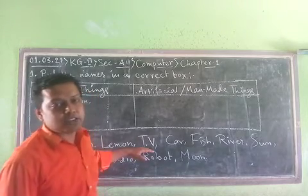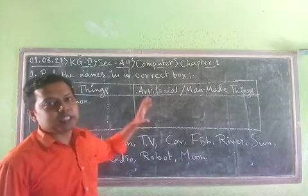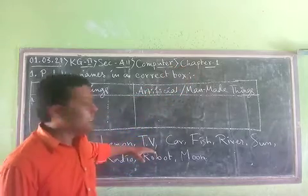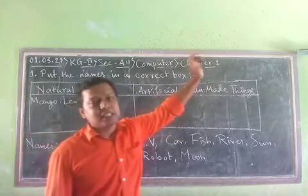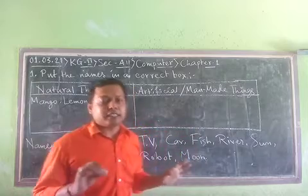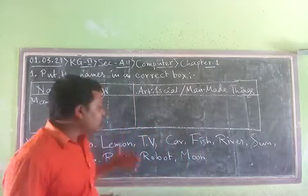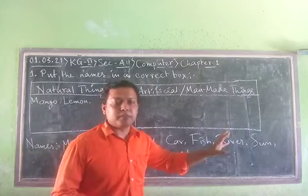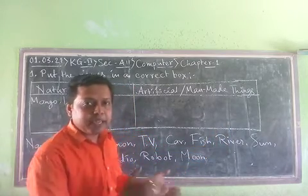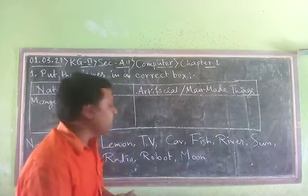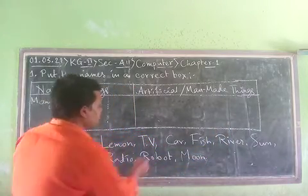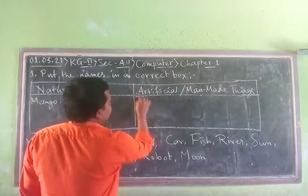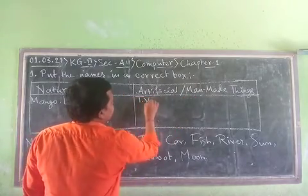Then comes TV. TV does not produce from a tree — we do not see a TV hanging on a tree. We purchased a TV from a shopkeeper by paying money. So TV is a man-made thing and we write TV in the man-made things box.